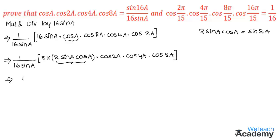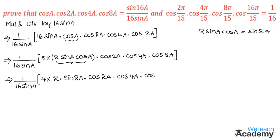By replacing and splitting 8, we get 1/(16 sin a) · 4 · 2 · sin 2a · cos 2a · cos 4a · cos 8a. Again, observing that 2 sin 2a · cos 2a is in the form of the formula 2 sin 2a cos 2a = sin 4a, let us now use this formula.